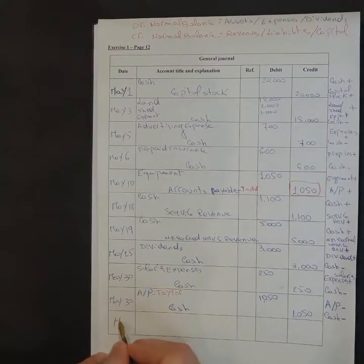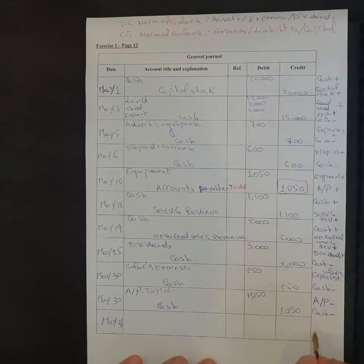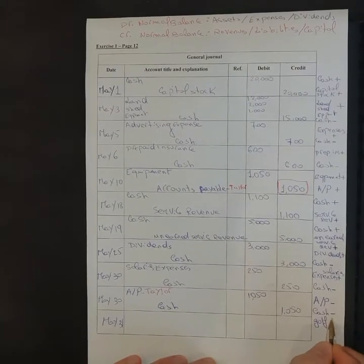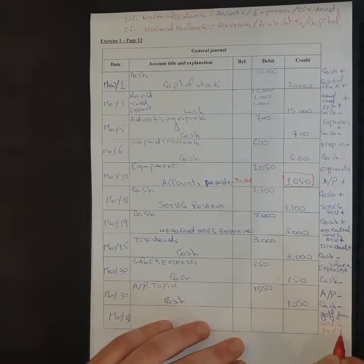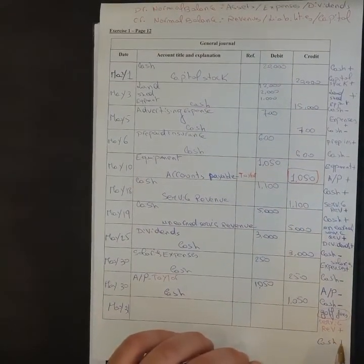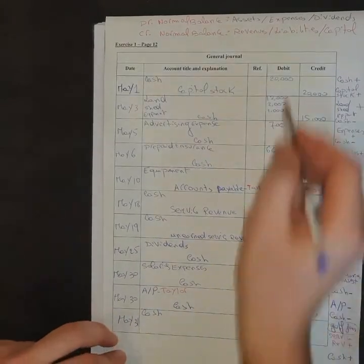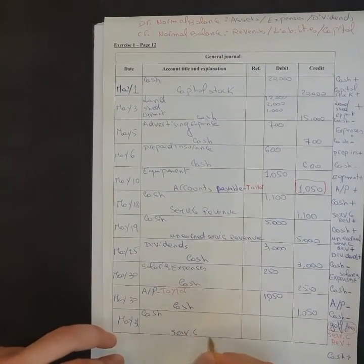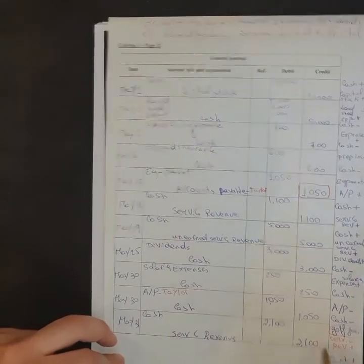May 31 — received $2,100 cash for golf fees. As previously explained, golf fees are recorded as service revenues. Cash is increasing, so cash — with its debit normal balance — is recorded in debit. Service revenues have a credit normal balance and increase in credit, so service revenue is recorded in credit for $2,100.